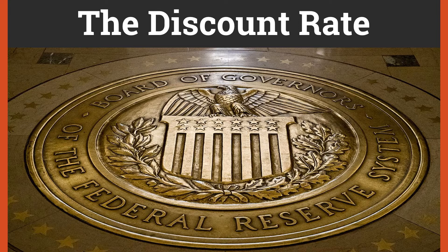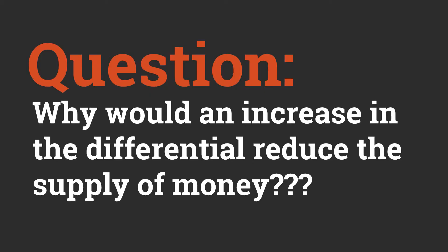So how do we use the discount rate to conduct monetary policy? If the Fed wanted to reduce the supply of money, it could increase the differential between the discount rate and the federal funds rate. Conversely, a decrease in that differential would have the opposite effect and increase the supply of money. Ask yourself: why would an increase in the differential between the federal funds rate and the discount rate reduce the supply of money?